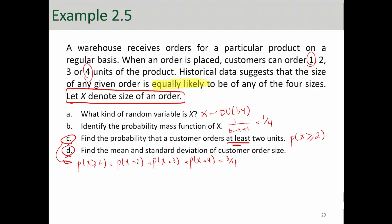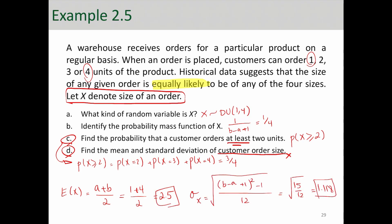Part d asks for the mean and standard deviation of customer order size, which is random variable X. We calculate the expected value of X using (a + b) / 2 and the standard deviation using the closed-form formula. A discrete uniform is probably the simplest form of any random variable — probabilities in the range are equally likely. It has two parameters: the starting point a and the ending point b of the range.